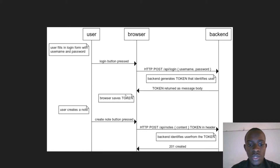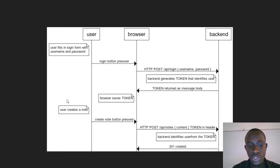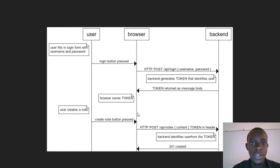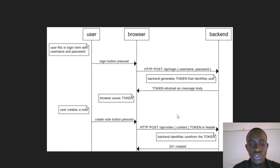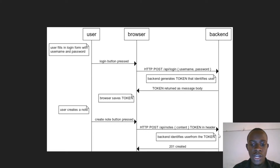When the back end generates a JWT that identifies the user, this token is returned as a message body to the client. The browser will save this token within what we call local storage. This is not the most secure way of storing user information, but for now it's the simplest way. A user can also access a protected route — in this example, they create a note by filling in a form and sending the data.